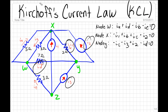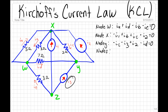And this should also equal to zero. Now for node Z: I3 is leaving node Z, so it has a positive sign: plus I3. Current IE is also leaving node Z, so it's also going to have a positive sign: plus IE. Current I1 is leaving node Z, so it's going to have a positive sign: plus I1. And the sum of these three should also equal to zero.